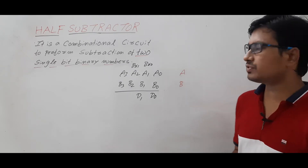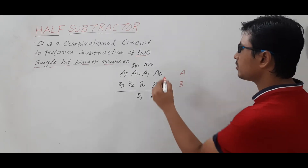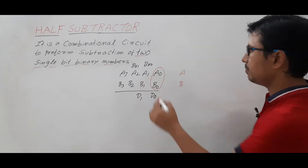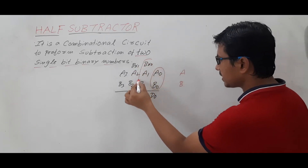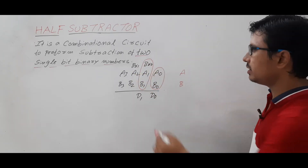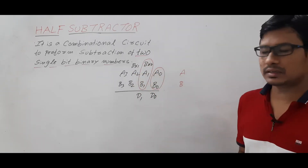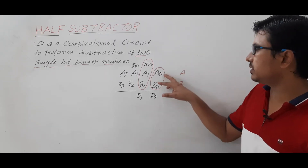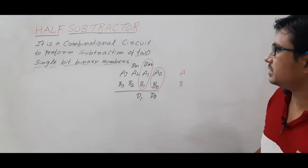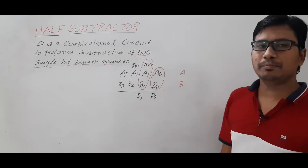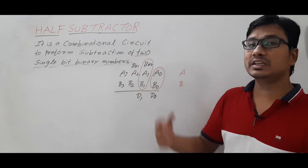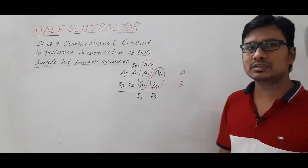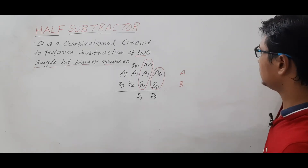Using the half subtractor we can perform the difference between two single-bit binary numbers, but using the full subtractor we can perform the difference between three bits. Using the half subtractor we can do only the difference between two single-bit numbers; using the full subtractor we can perform subtraction of three single-bit numbers. The full subtractor I will discuss in the next video.